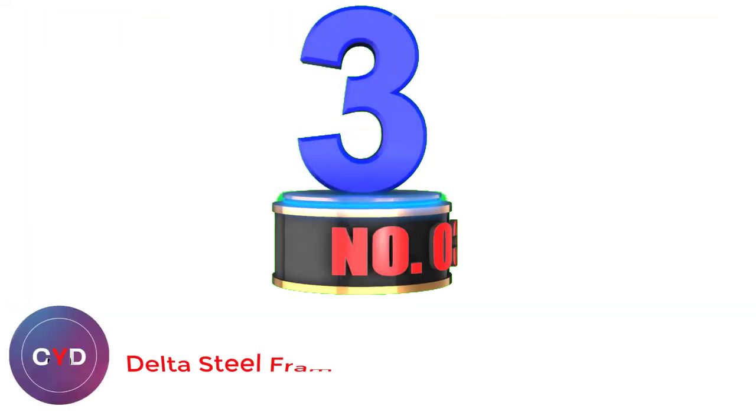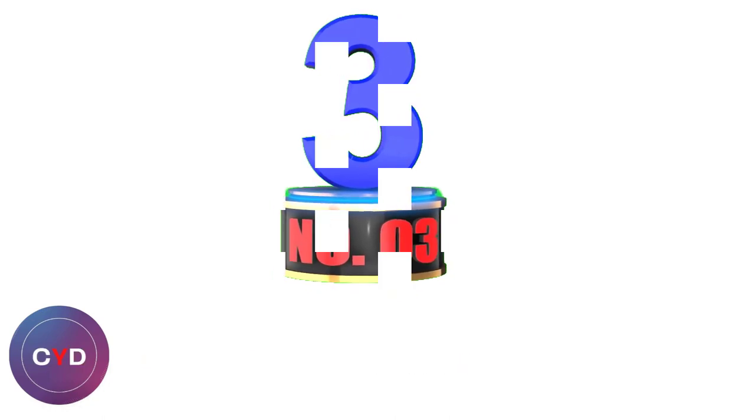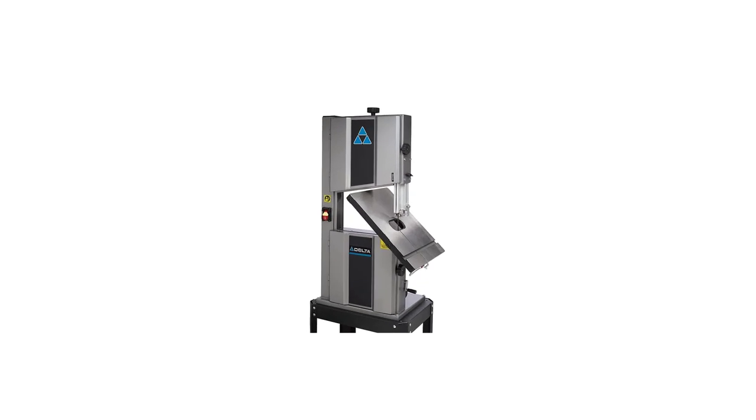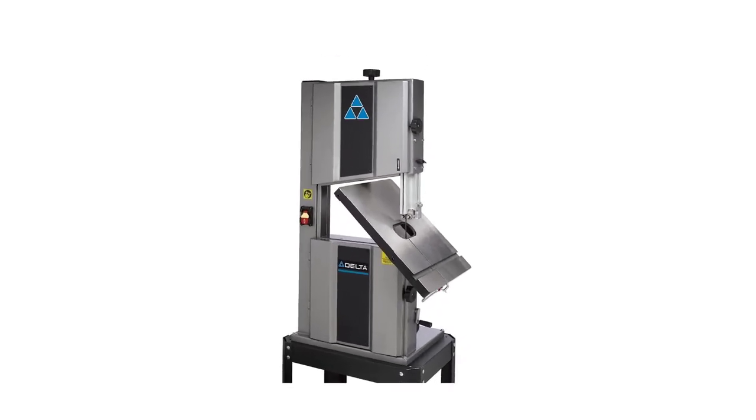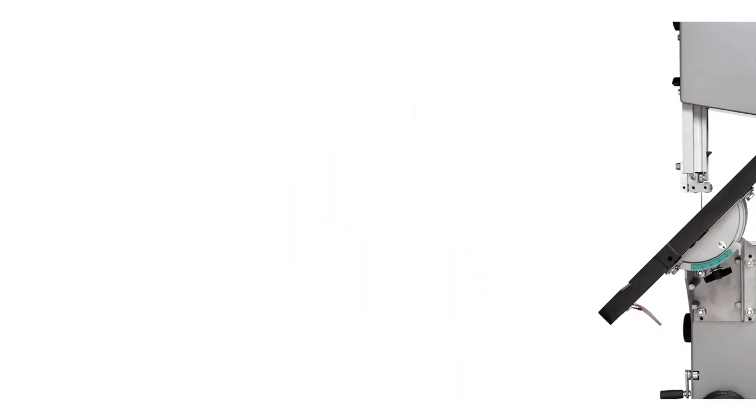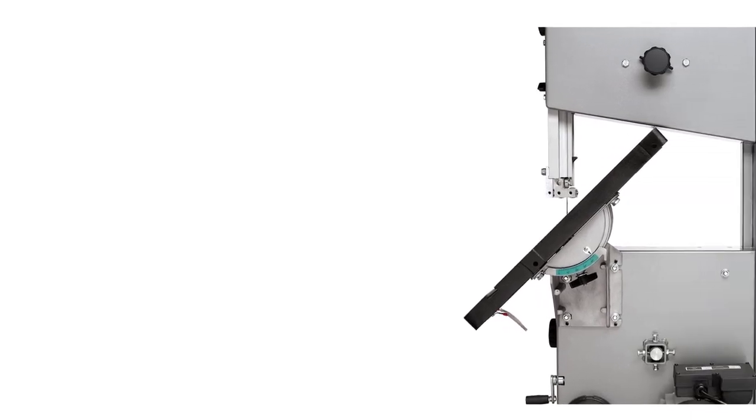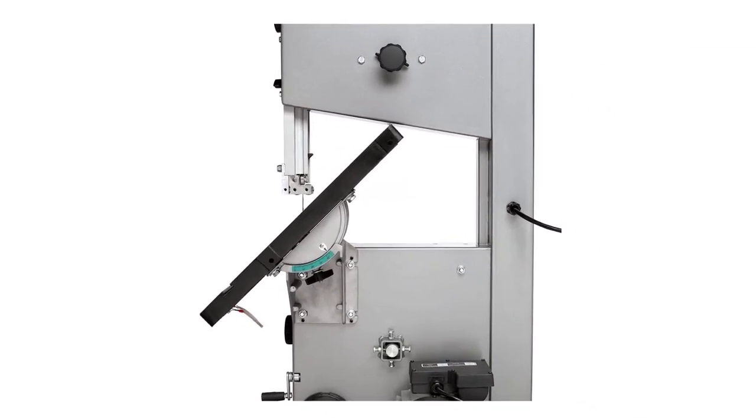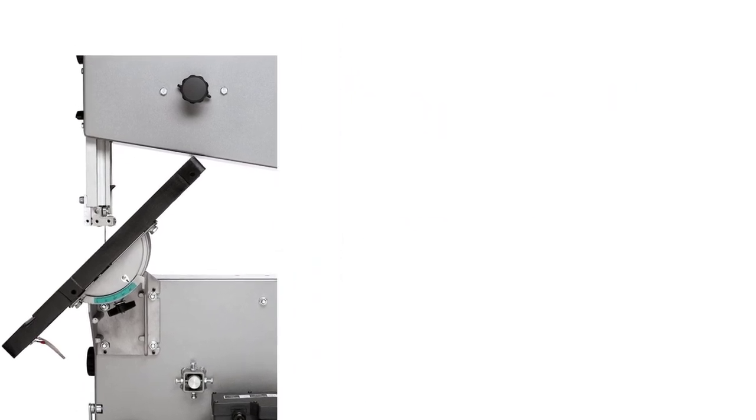Number 3: Delta Steel Frame Bandsaw. The Delta 28-400 14-inch steel frame bandsaw, which bears a 1 HP TEFC motor with a dual-voltage feature (115V/230V single-phase), has two speeds of 1,620 FPM and 3,340 FPM, which makes it ideal for cutting both wood and metal workpieces.